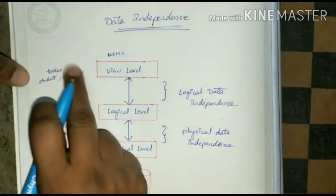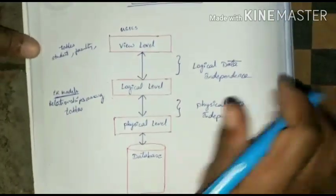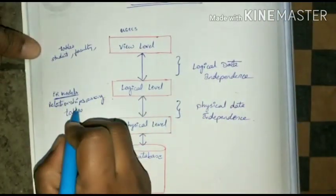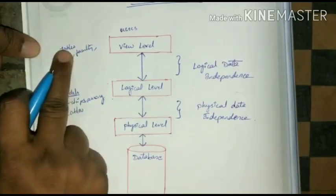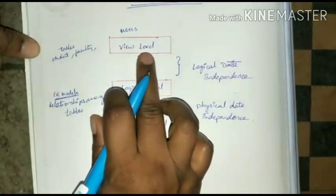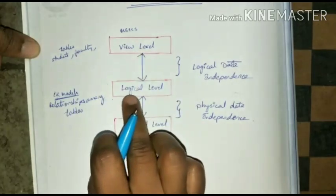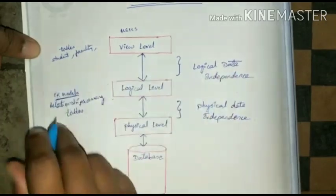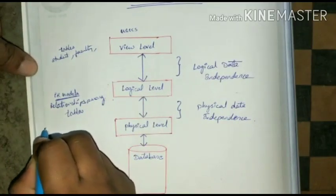Logical data independence means that when table structures or relationships change, that will not affect the view level. So when table formats or relationships change, the view level will be unaffected by changing the logical level — that is logical data independence.